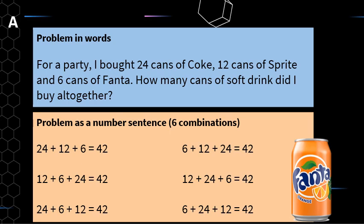We could do the most obvious number sentence. We know the operation we need is addition because we're adding more cans — increasing the number of cans. So 24 plus 12 plus 6 equals 42. Reading from left to right — that's one of our rules or conventions in mathematical language, just like we do in English.